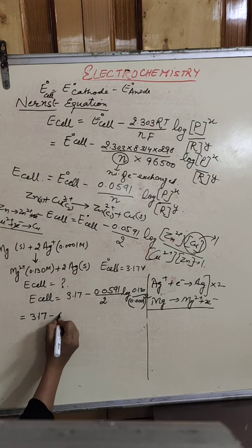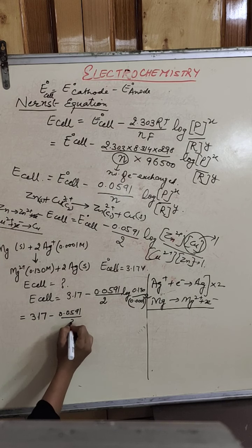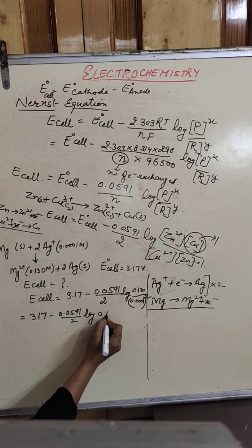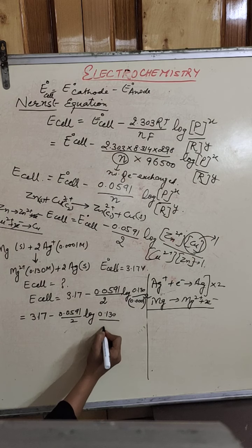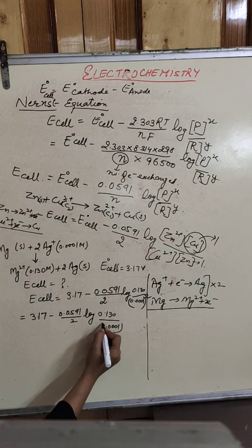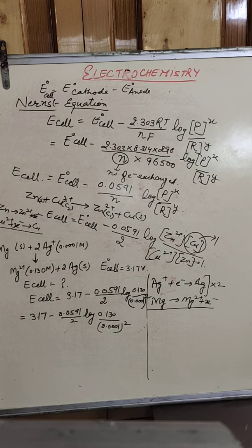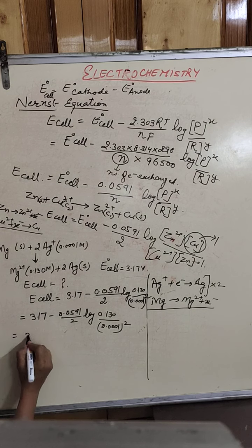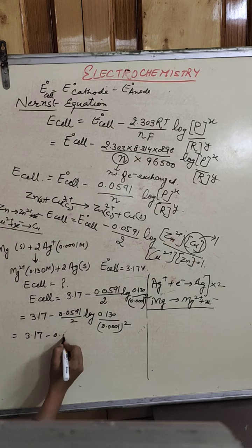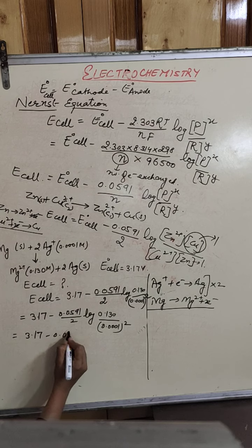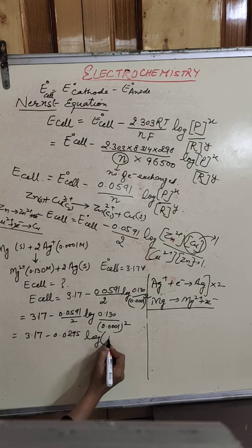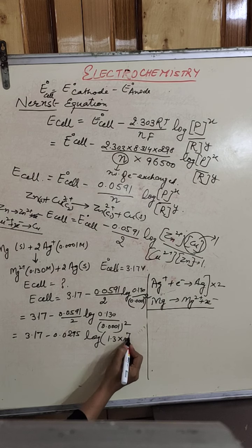So the full expression is: 3.17 minus 0.0591 upon 2 multiplied by log of 0.130 divided by (0.0001)². This simplifies to 3.17 minus 0.02955 multiplied by log of 1.3 × 10⁷. Reading the log table gives a value of approximately 7.1139.